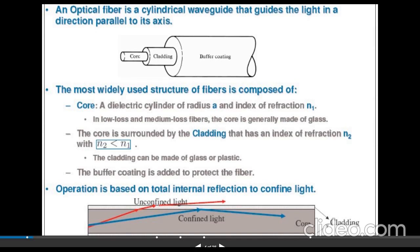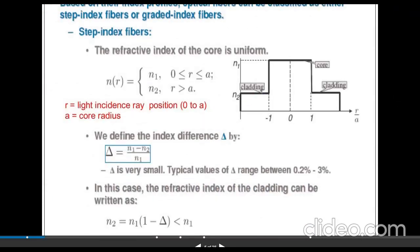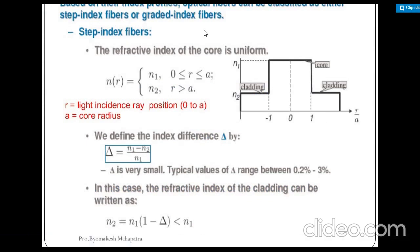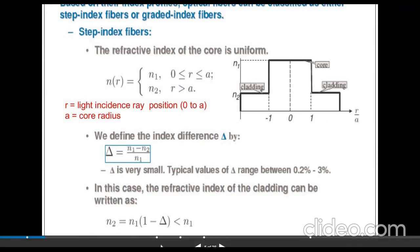For a step-index fiber, the refractive index of the core is uniform. For a gradient-index fiber, the refractive index n(r) varies. n1 is for the core and n2 is for the cladding. The index difference delta is defined as δ = (n1 − n2) / n1. Cross-multiplying, n2 equals n1 into (1 − δ). The typical value of delta ranges from 0.2% to 3%.